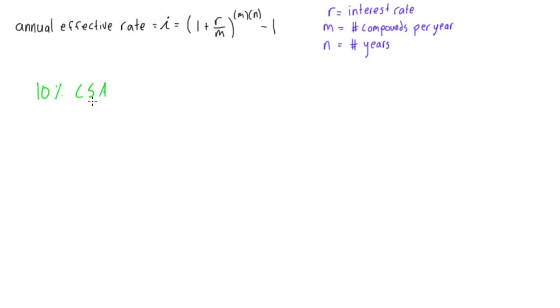When you see this compounded semi-annually here, basically what it means is you take the number of times that you're compounding, in this case semi-annually would be two, and you divide it by this 10%. So we get 10 divided by 2 is going to give us 5%.